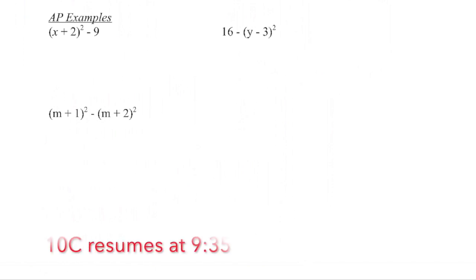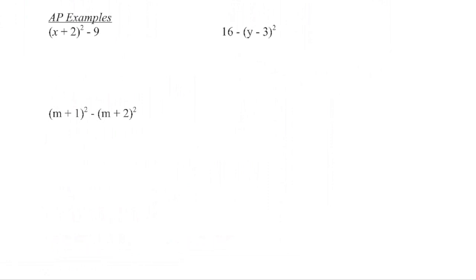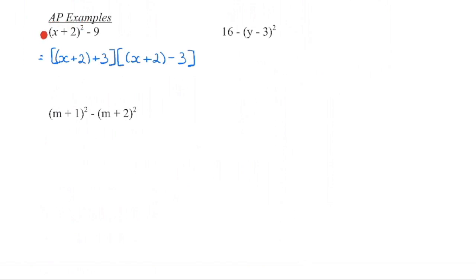If you are in regular 10C, there's another type of polynomial we still have to factor, but we're going to take a look at some AP examples. Here we have a perfect square minus another perfect square, so we set up conjugates — one is a plus and one is a minus. Square rooting (x plus 2) squared cancels the square, giving us x plus 2 in each bracket. Square root 9 gives 3. Combining like terms: 2 plus 3 is 5, and 2 minus 3 is negative 1.